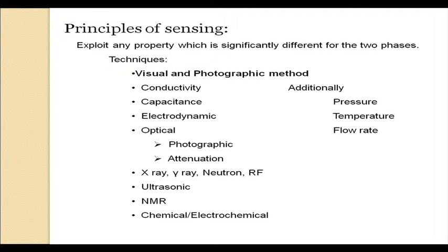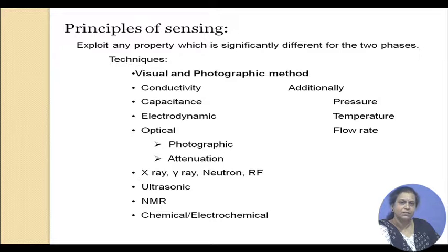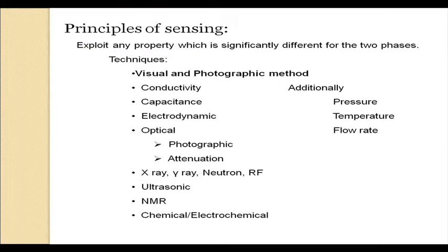It can happen that the two phases have widely different optical properties - a difference in refractive index or absorption coefficient. This is particularly exploited for liquid-liquid systems where intrusive conductivity or capacitance probes cannot be used freely. We can also use differences in attenuation of gamma ray, X-ray, or neutron radiation, or an ultrasonic probe measuring the difference in absorption of ultrasonic waves. Additionally, we can measure fluctuations in pressure, temperature, and flow rate.